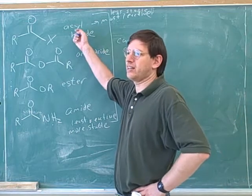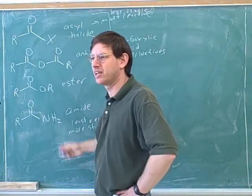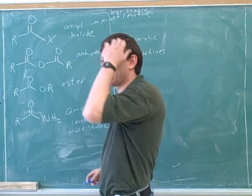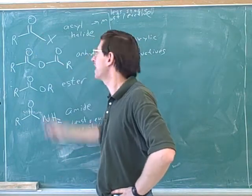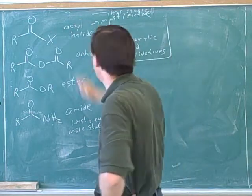But notice, once we've made the acyl halide, we're sitting pretty. Because once we've made the acyl halide, we can make anything else. So it's kind of a chicken and egg problem. If we could only make the acyl halide, we could make anything else we want. But how do we get up here? Well, there's a special reaction to get up here to the top of the mountain.